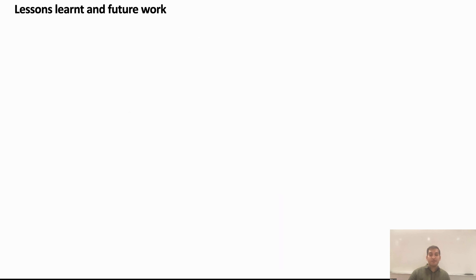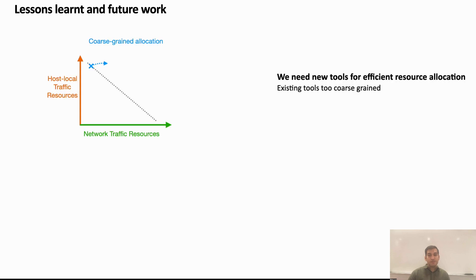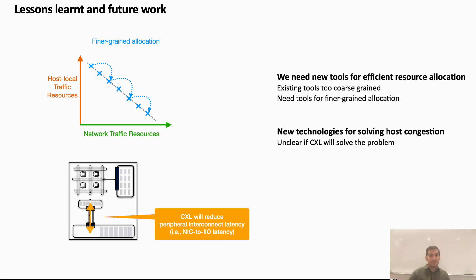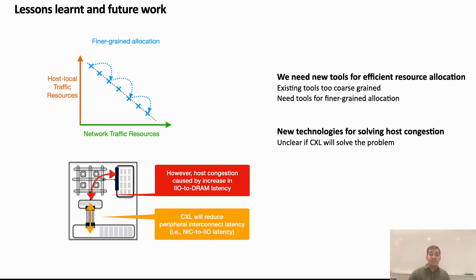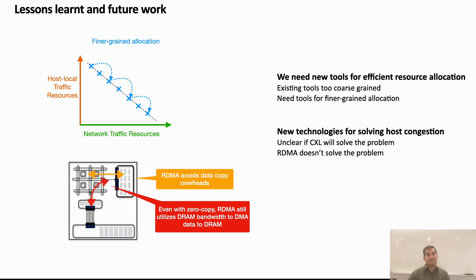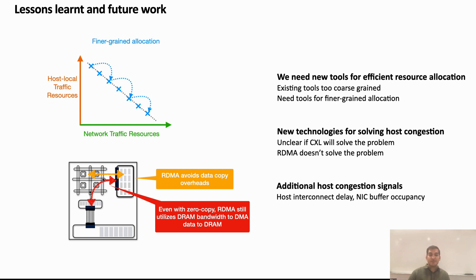I'll now outline a few interesting avenues of future research based on our experience building Host CC. First, the tool for host resource allocation currently used in Host CC, MBA, has a key limitation: upon successive MBA levels, it results in coarse-grained allocation for host resources. We need more support from hardware to perform fine-grained host resource allocation at sub-RTT granularity. Second, it is unclear if newer technologies like CXL or RDMA would help resolve host congestion. For example, CXL would help reduce PCIe IO latency, but it does not alleviate congestion at the memory interconnect. RDMA using zero-copy reduces memory bandwidth utilization to a certain degree, but network traffic still traverses the memory interconnect while performing DMA. Finally, it would be useful to explore additional host congestion signals. Host CC can be easily extended to incorporate additional signals; for instance, we discussed in the paper some simple extensions to generate delay-based congestion signals. Also, while commodity hardware does not provide NIC buffer occupancy, it would be interesting to explore whether it can provide accurate information on time, location, and reason for host congestion.